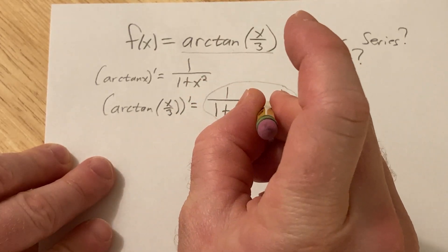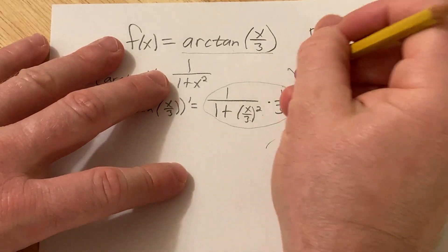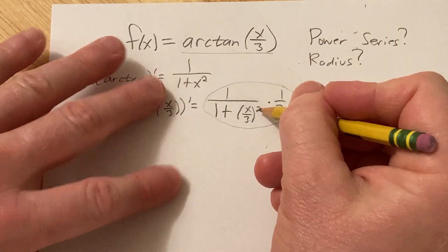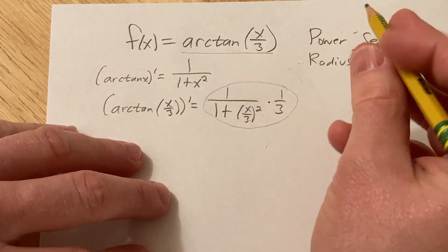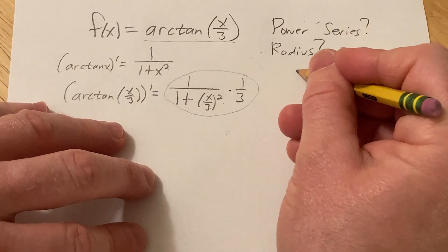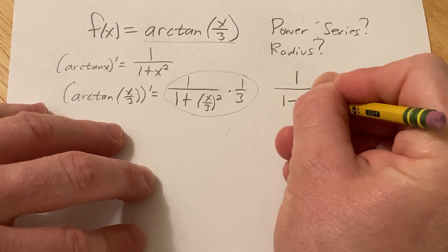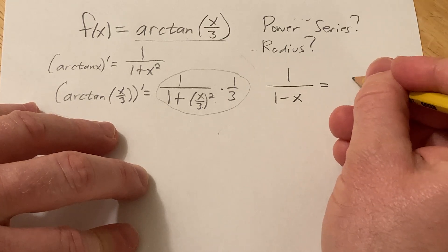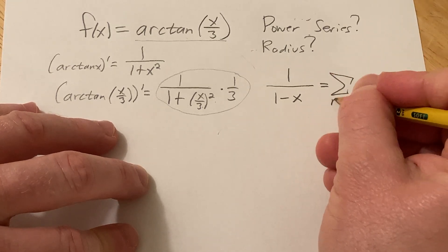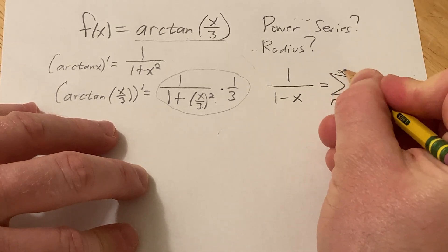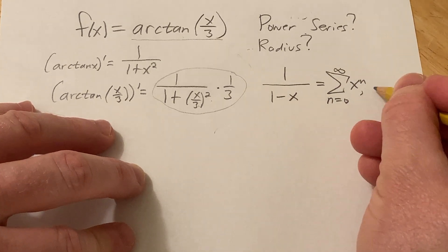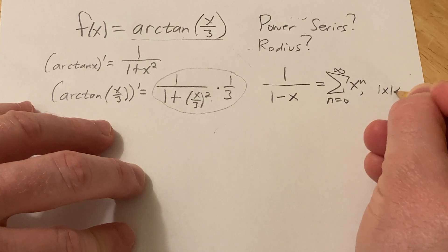Now, in order to come up with a power series for this, we're going to use a formula. So this is a formula that is typically given in most calculus books. So if you have 1 over 1 minus x, this is equal to the infinite sum as n runs from 0 to infinity of x to the n.